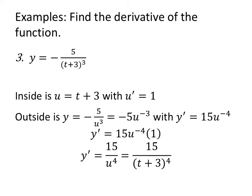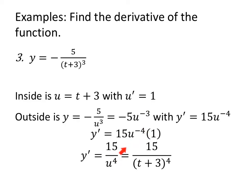Let's do another example. If y equals negative 5 over (t plus 3) cubed, I'm going to let u equal t plus 3. The derivative u prime is just 1. My outside is minus 5u to the negative 3, whose derivative is 15u to the negative 4. The overall derivative is the derivative of the outside, leaving the inside alone, times the derivative of the inside, which is 1. Replace u with t plus 3 and we're good to go.